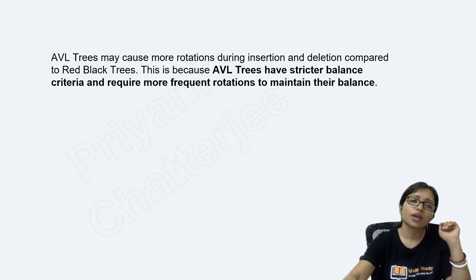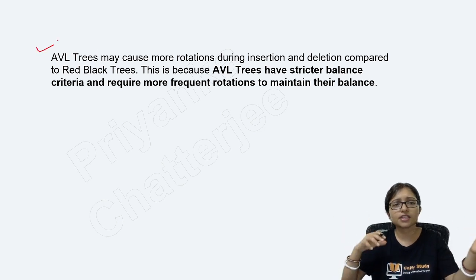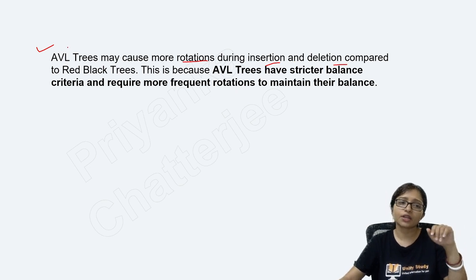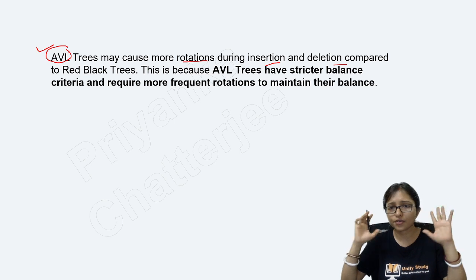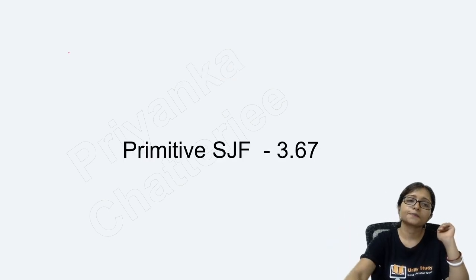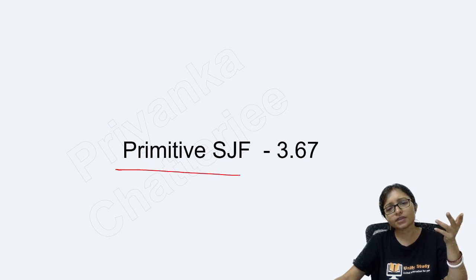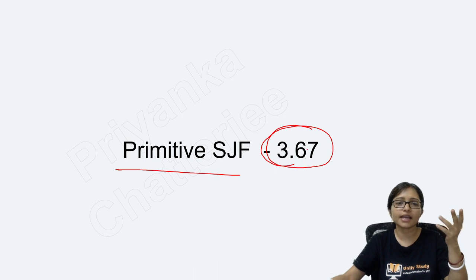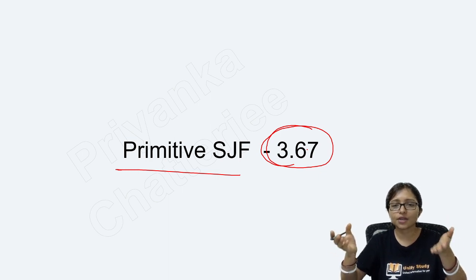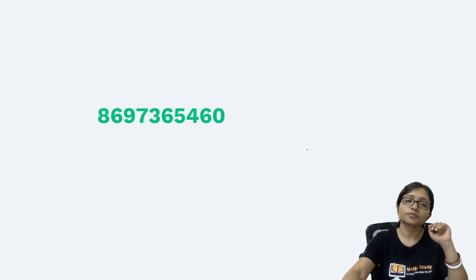Another question compared AVL trees and red-black trees regarding which requires more rotations. AVL trees may cause more rotations during insertion and deletion, so the answer is AVL tree requires more rotations. Some students also reported a preemptive SJF scheduling question where the answer came to 3.67, but the exact data wasn't recalled clearly.